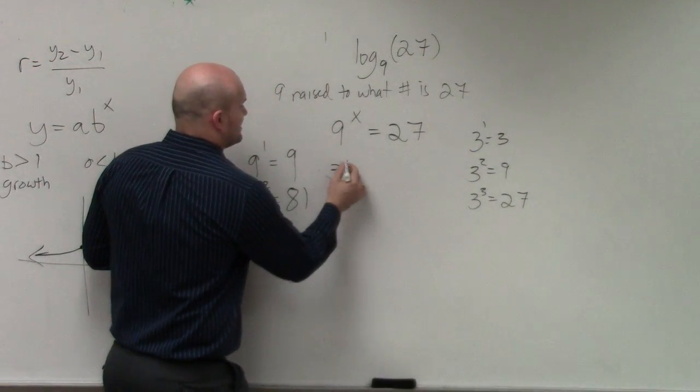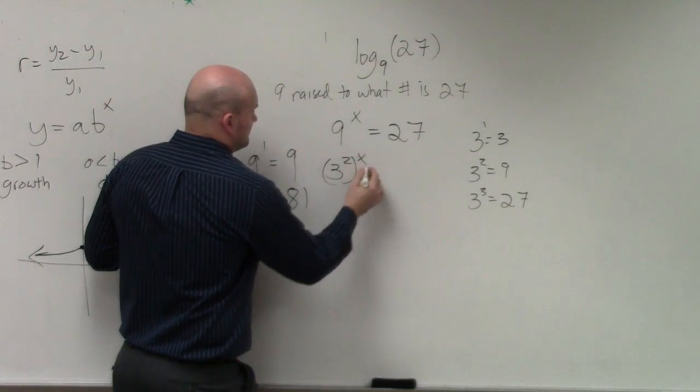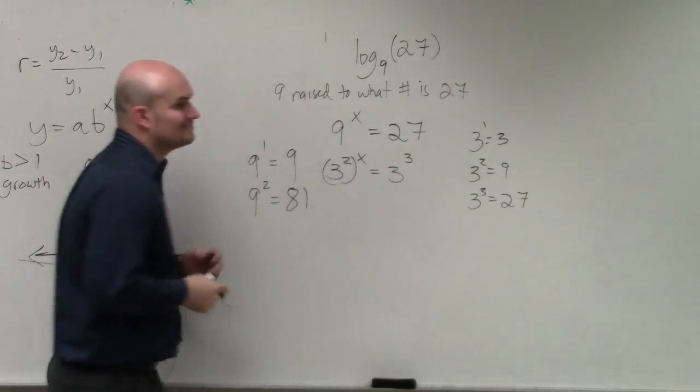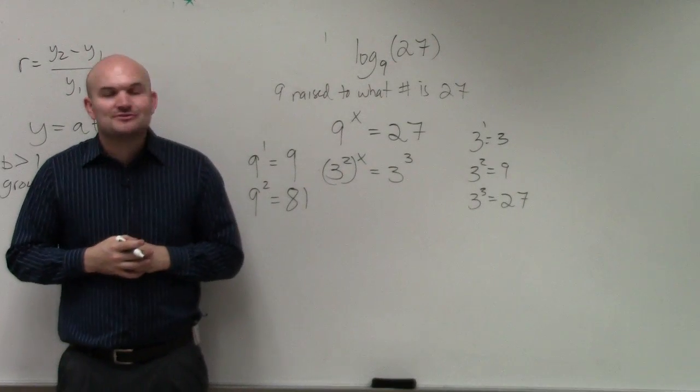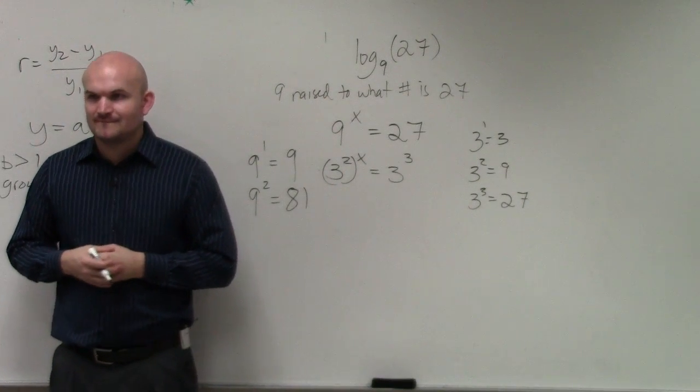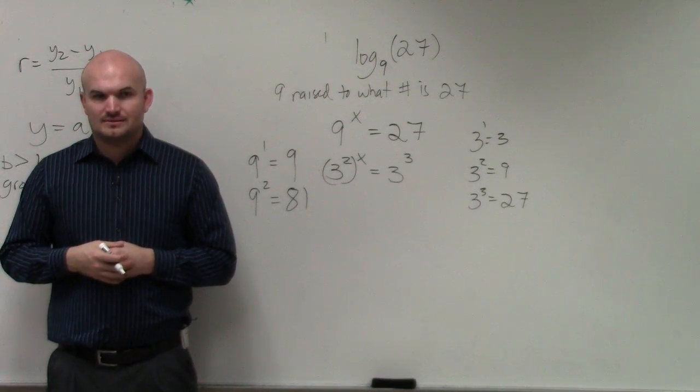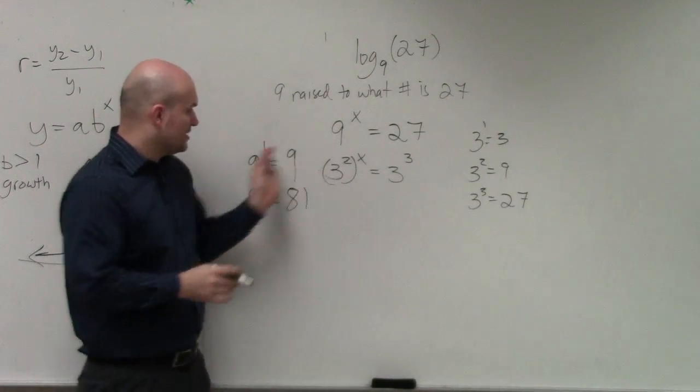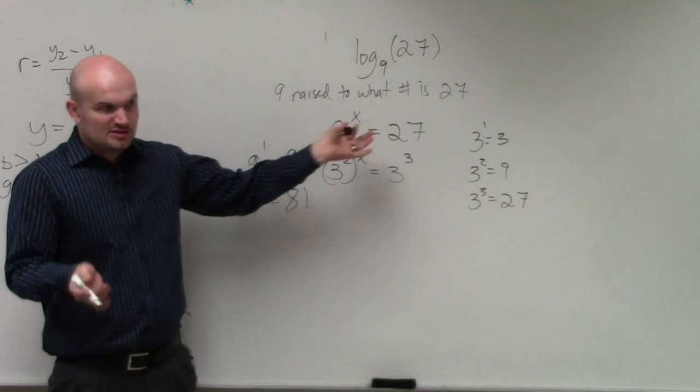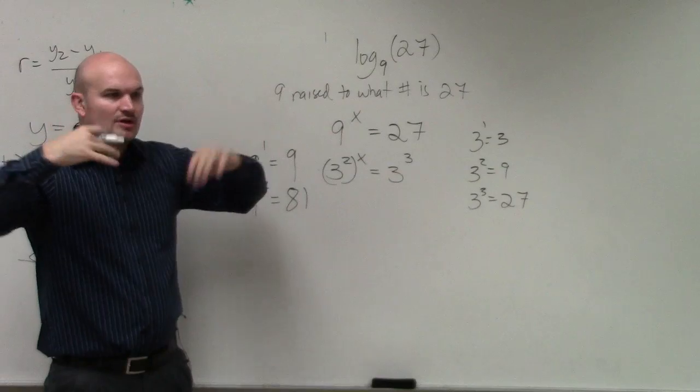So therefore, I can rewrite this as 3 squared raised to x equals 3 cubed. Now, do you guys see I have two exponents with the same base? Do you agree with me that 3 squared is 9 and 3 cubed is 27? So I didn't change the problem, I just rewrote it.